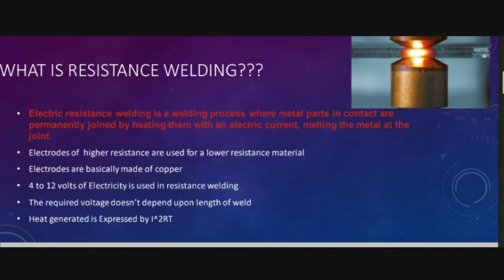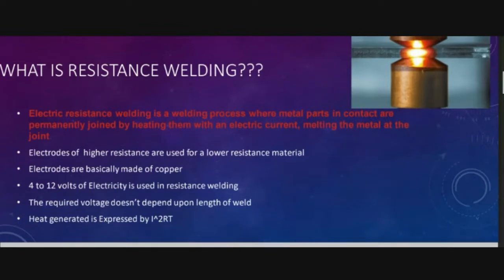Now let's see the different types of electric welding. The first type is called plastic welding, also similar to pressure welding. Here, heat is applied along with pressure — the pieces of metal to be joined are heated to a plastic state and then forced together with external pressure. Forge welding, resistance welding, thermite welding, and gas welding are considered this kind of plastic or pressure welding.